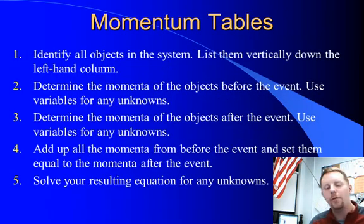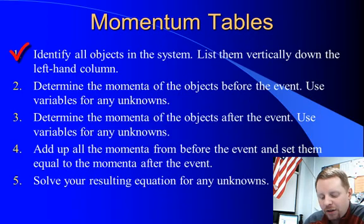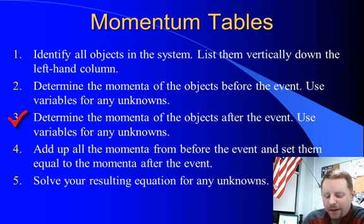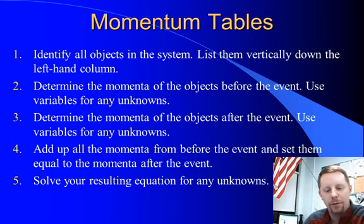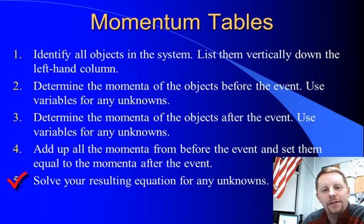We can use a tool known as a momentum table to help us analyze systems of collisions and explosions. We start by identifying all of the objects in the system and listing them vertically down the left-hand column. Then we determine the momenta of the objects before the event, substituting a variable for any unknowns. Next we find the momentum of the objects after the event, again substituting a variable if needed. Finally, we add up all the momenta before and after the event and set them equal to each other, then solve for any resulting unknowns.